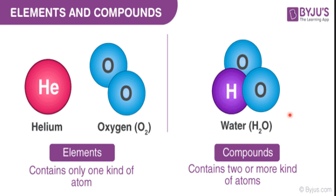So, compounds: substances that are made up of two or more types of atoms are called compounds. Like every element, every compound is made up of a unique set of properties. Some compounds are made up of molecules.